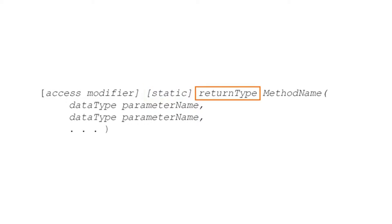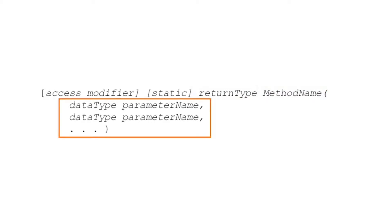This tells us what data type the method returns. Then we provide the method name. And finally, we have a list of zero or more parameters — pieces of information that get passed into the method. For each parameter that we do include, we include the data type for that parameter and a parameter name, the way that we will refer to that parameter within the body of the method.